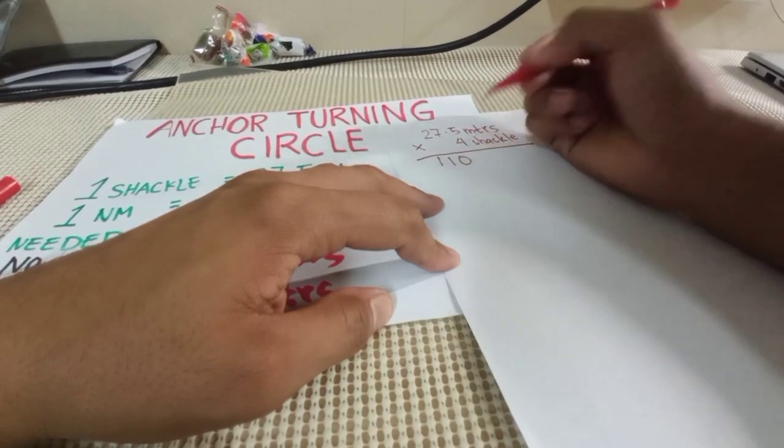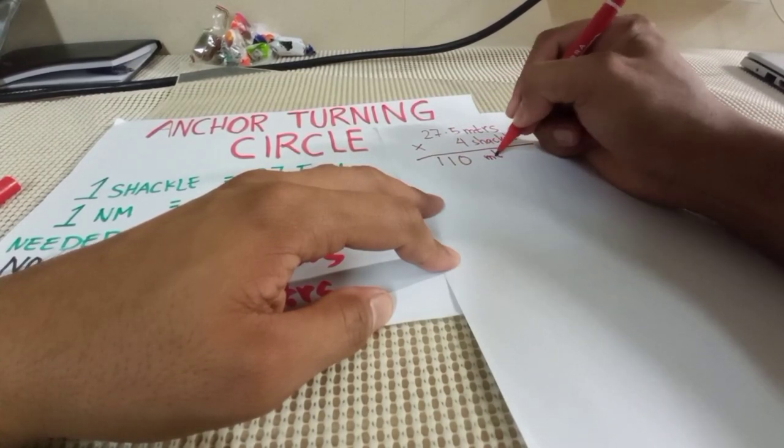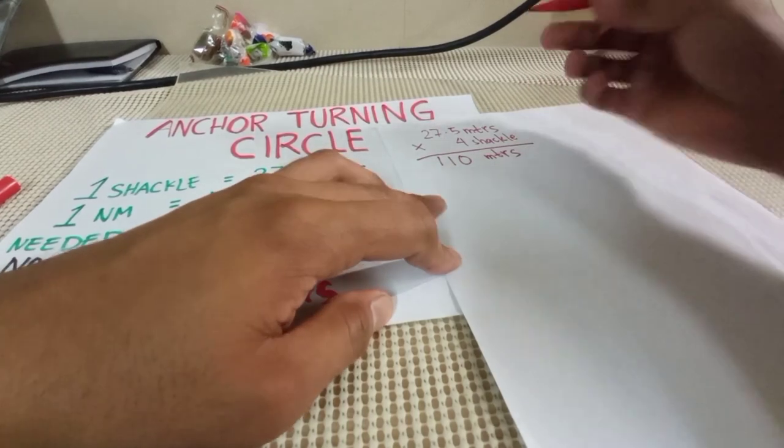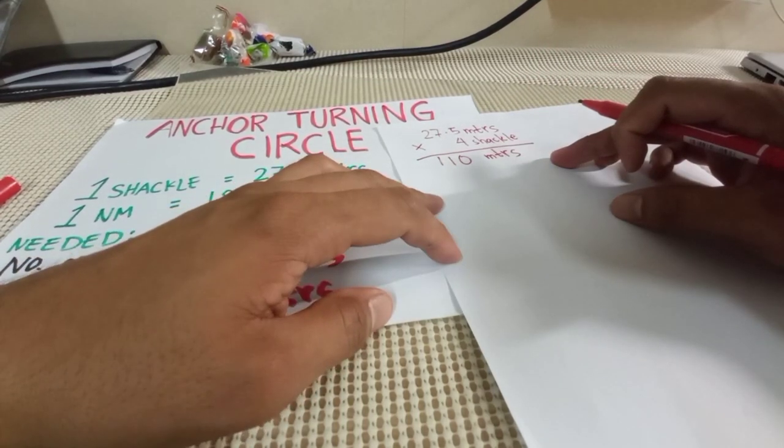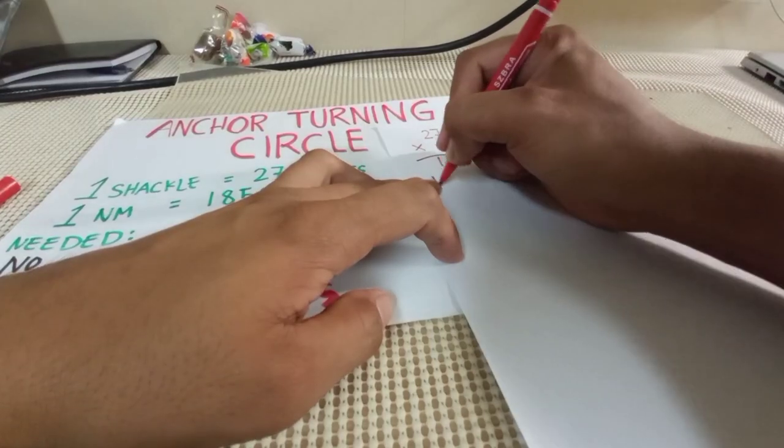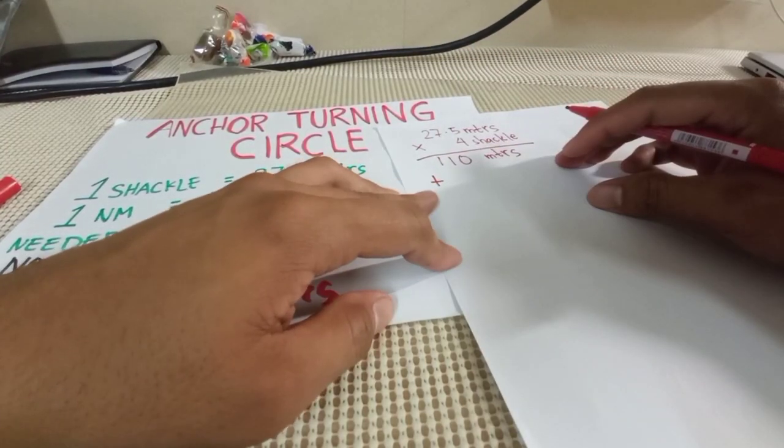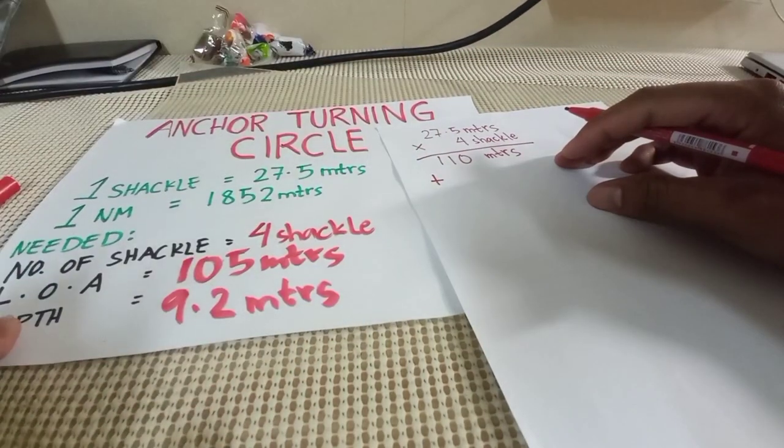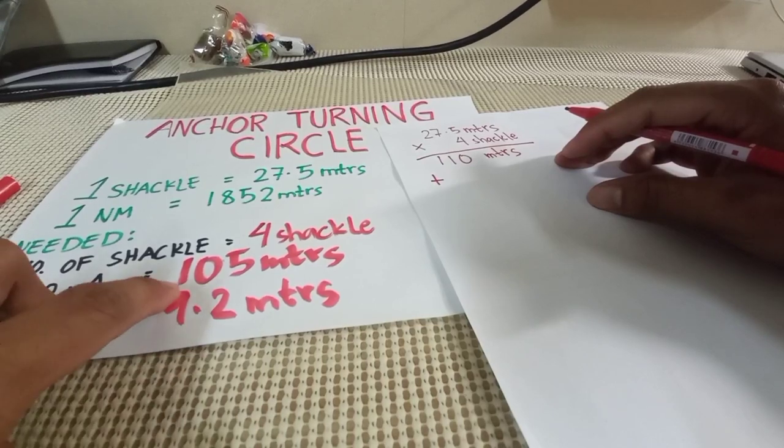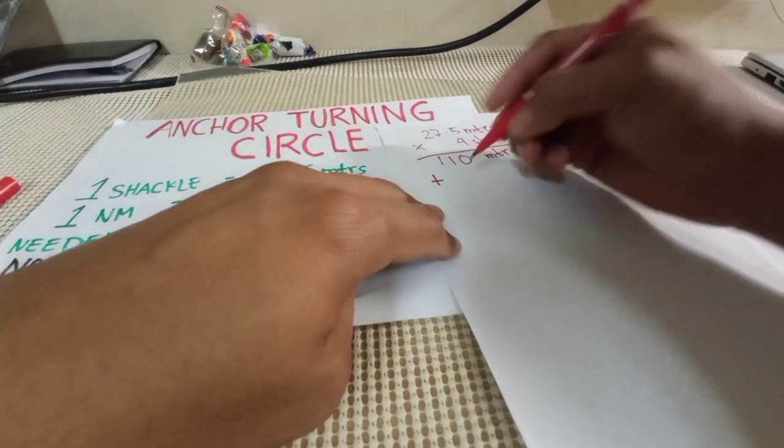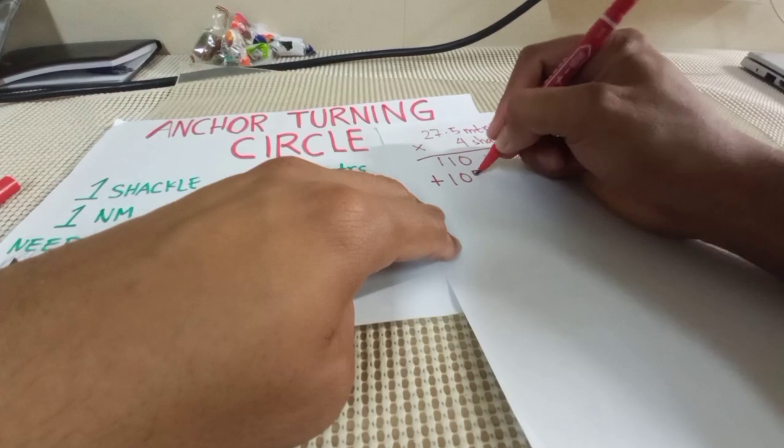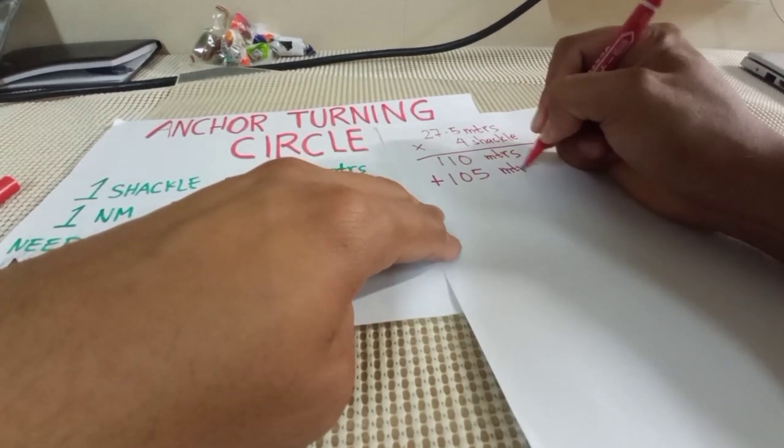So 4 shackle is equal to 110 meters. Then we have to add the length over all. Length over all is 105 meters.